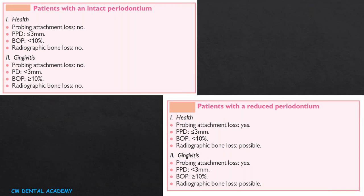Patients with an intact periodontium are categorized as healthy when probing attachment loss is absent, periodontal pocket depth is 3 mm or less, bleeding on probing is less than 10%, and there is no radiographic bone loss. For a diagnosis of gingivitis, periodontal pocket depth is around 3 mm, bleeding on probing is more than 10%, and there is no radiographic bone loss. In patients with reduced periodontium, health is characterized by no attachment loss, pocket depth less than or equal to 3 mm, bleeding on probing less than 10%, and no radiographic bone loss. For gingivitis on reduced periodontium, probing attachment loss is present, pocket depth less than 3 mm, bleeding on probing 10% or more, and radiographic bone loss is possible.